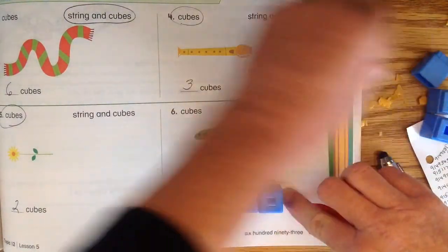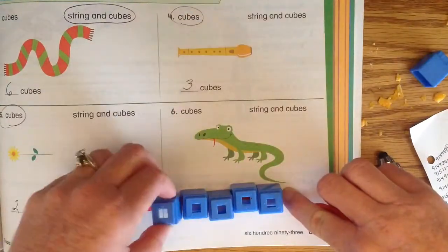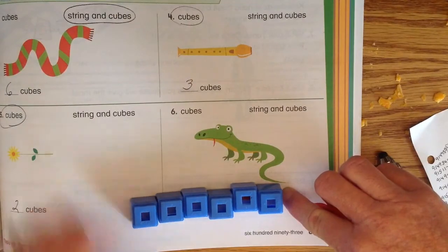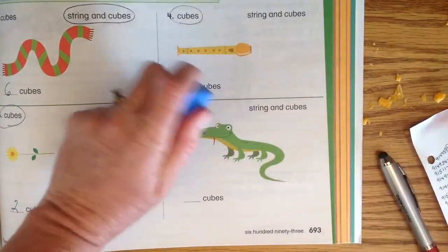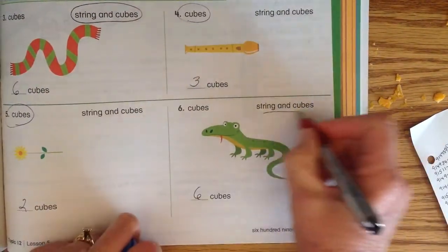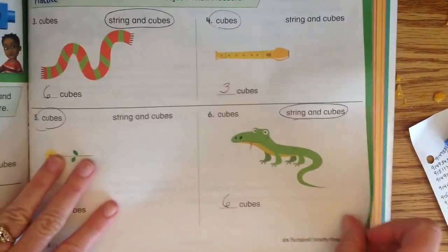So I'm gonna put the cubes down. One, two, three, four, five, and probably I think I could fit that other one on. Six cubes long. So the lizard if he's all straightened out is about six cubes long, but we need both the string and the cubes to figure it out.